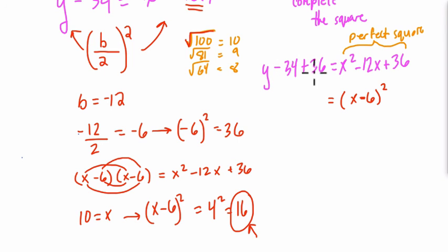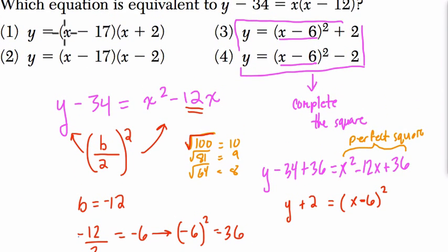So y minus 34 plus 36, that's y plus 2. So this is what we have right here. Let's look at our choices. Notice they've isolated y in all of them. So I'm just going to take y and isolate it by subtracting 2. And our final answer is x minus 6 squared minus 2. That is choice 4. Thanks.